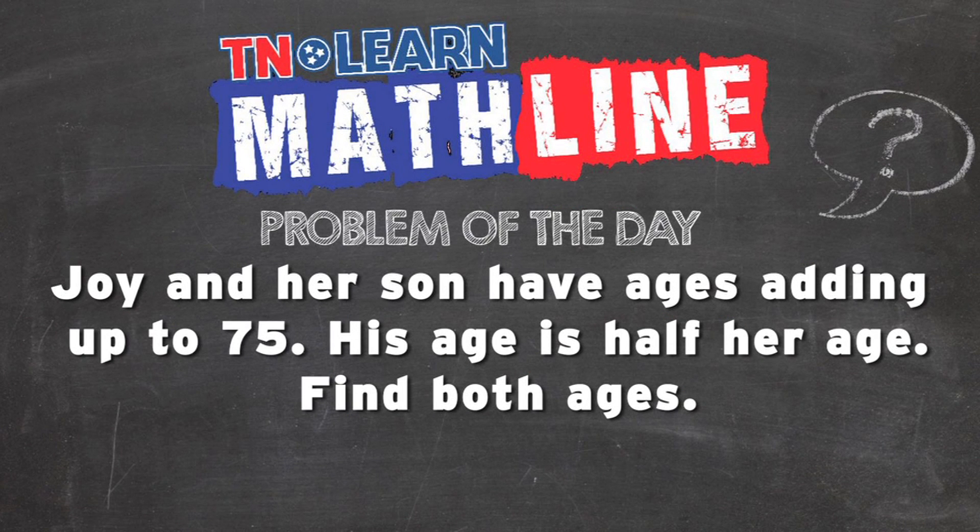Joy and her son have ages adding up to 75. His age is half her age. Find both ages.